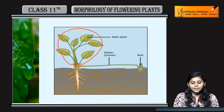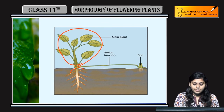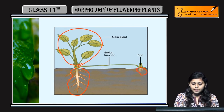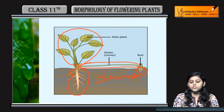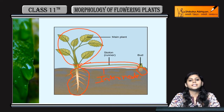Here you can see rosette of leaves hai aur tufts of roots hain. Yeh hai internode region. Yeh Eichhornia ya Pistia mein dekh sakte hain.